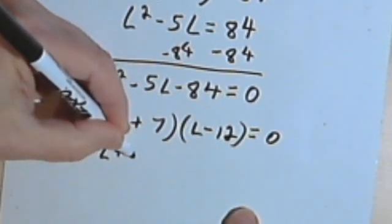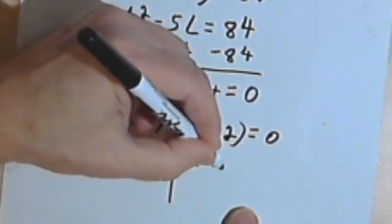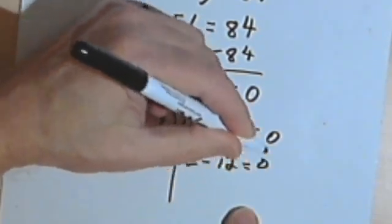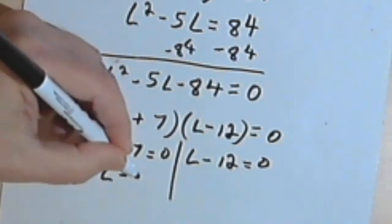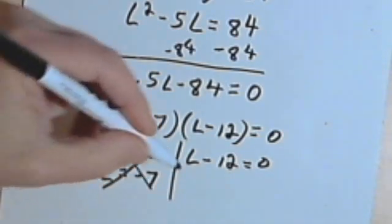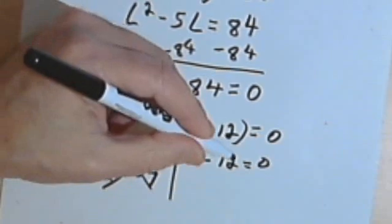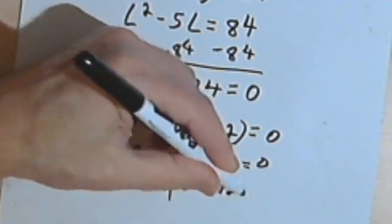I'll set both of those equal to 0. So if I've got L plus 7 equals 0, L would have to equal negative 7. Now that's not going to work because I can't have a side that's a negative length. But the other one, L minus 12 equals 0, means that L equals 12.